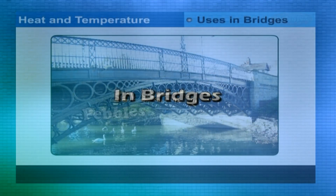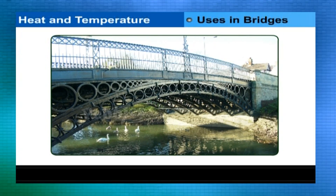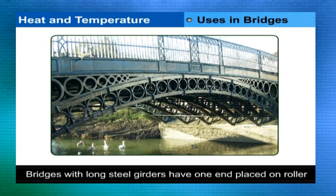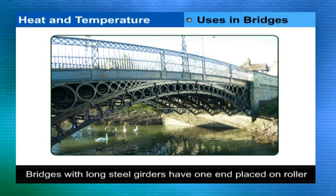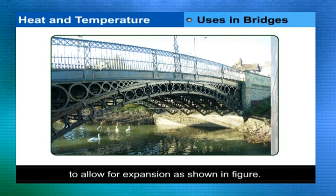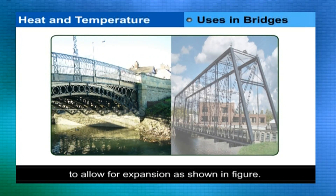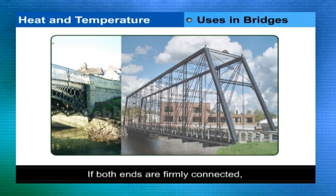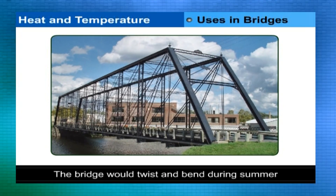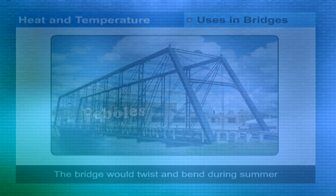In bridges: bridges with long steel girders have one end placed on rollers to allow for expansion, as shown in the figure. If both ends are firmly connected, the bridge would twist and bend during summer.